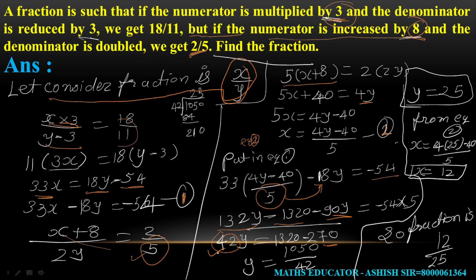So 42y equals 1050. Dividing both sides by 42, we get y equals 25. Now substituting y equals 25 into Equation 2: x equals (4 times 25 minus 40) divided by 5, which is (100 minus 40) divided by 5, that is 60 divided by 5, so x equals 12. Therefore, the fraction is x upon y, which is 12 upon 25.